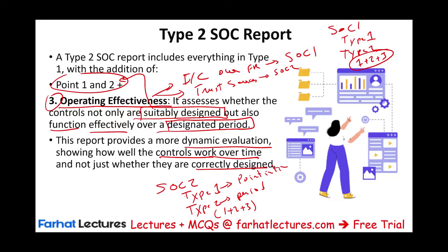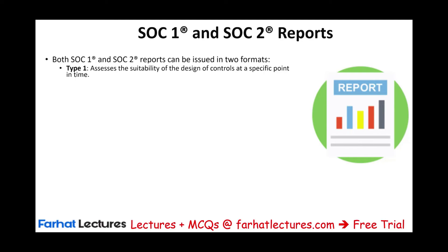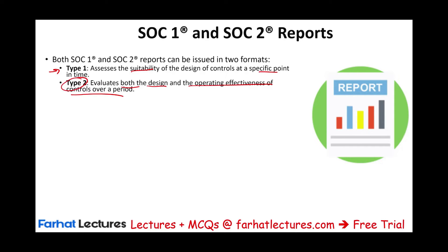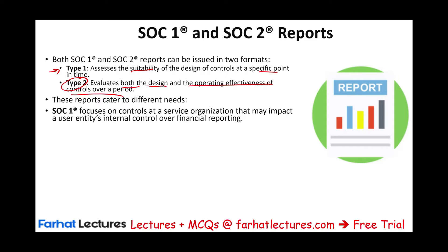These are the types of questions you could see on the CPA exam, because the Information Systems and Controls section tests basic knowledge, remembering, and understanding. SOC 1 and SOC 2 can both be issued in two formats. Type 1 assesses the suitability of the design of controls at a specific point in time. Type 2 evaluates both the design and the operating effectiveness — whether things are working properly over a period of time. Type 2 is more involved and gives you more assurance.